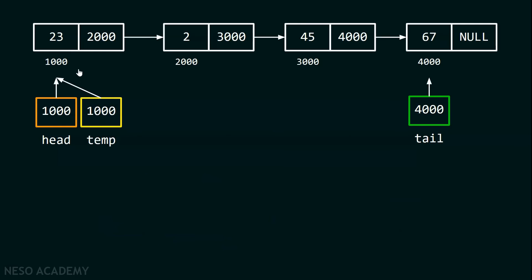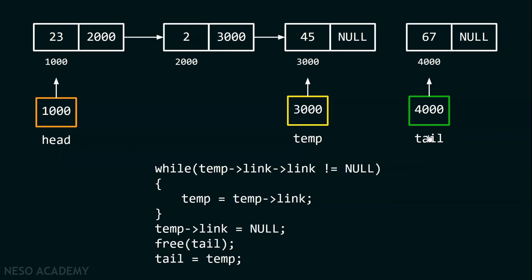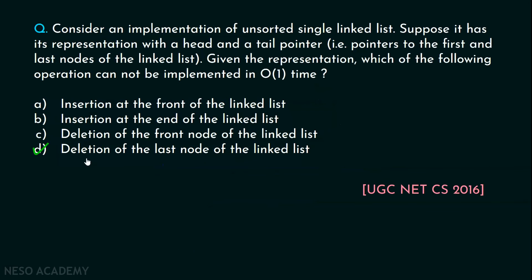We use a temp pointer starting at the first node and move it towards the right until temp's link's link equals null — meaning temp points to the second-last node. Then we update the link part of that node to null, delete the last node using the tail pointer, and update the tail pointer to the address held in temp — that is, address 3000. Now the tail pointer is pointing to the second-last node. Because this traversal is required, deletion of the last node takes O(n) time, and therefore option D is the correct answer.